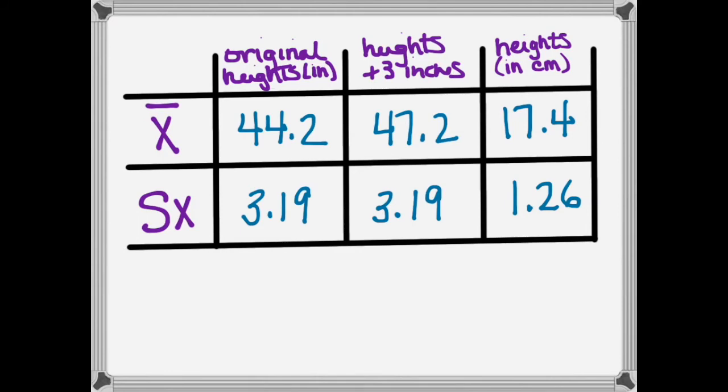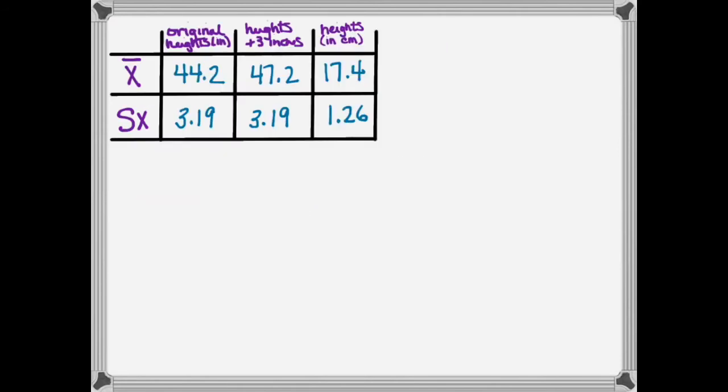Let's think about what's happening here. If we're taking a look at the relationship between the mean of the original heights and the mean of the heights when I added three to every student, I can tell that the original mean of 44.2 and the new mean of 47.2 are separated by three.